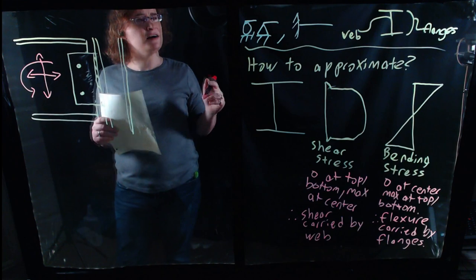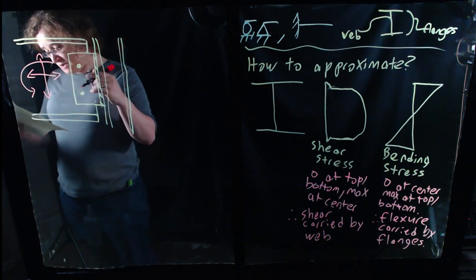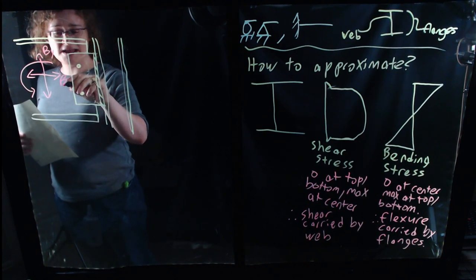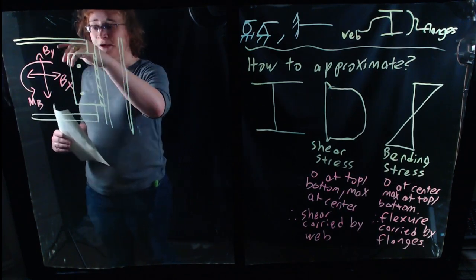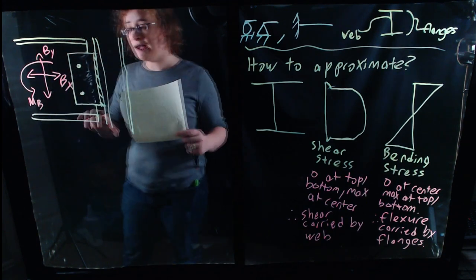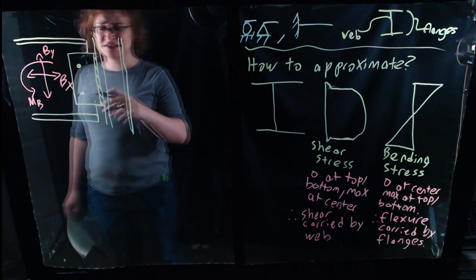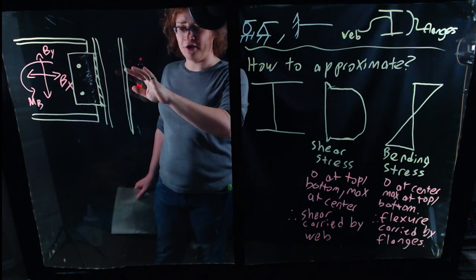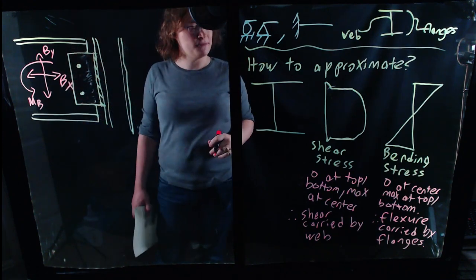I'll label these as BY (vertical reaction force), BX (horizontal reaction force), and MB (the moment transferred through this connection). I want to analyze and consider whether this connection is capable of transferring substantial amounts of each of these — not claiming it will transfer large amounts of all three, just analyzing whether it's capable.